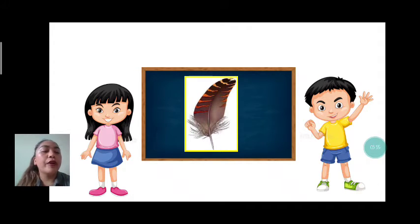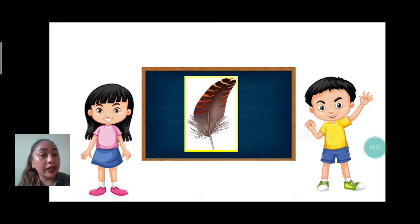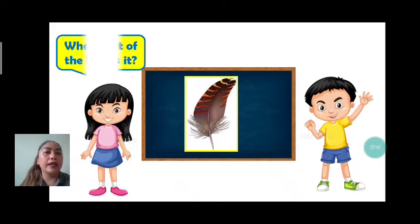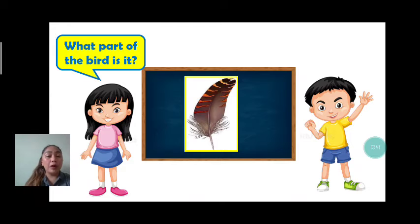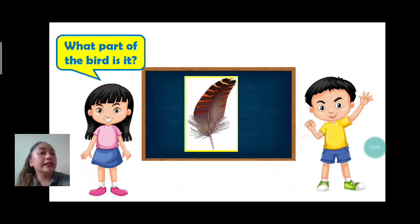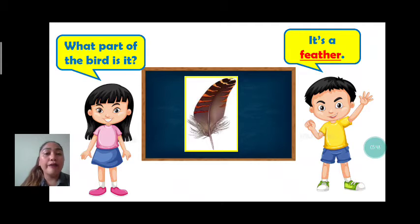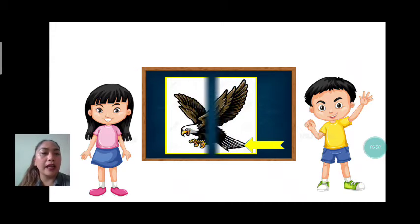Next, we have feather. The vocabulary is feather. What part of the bird is it? Answer: it's a feather. One more time: it's a feather. Very good.